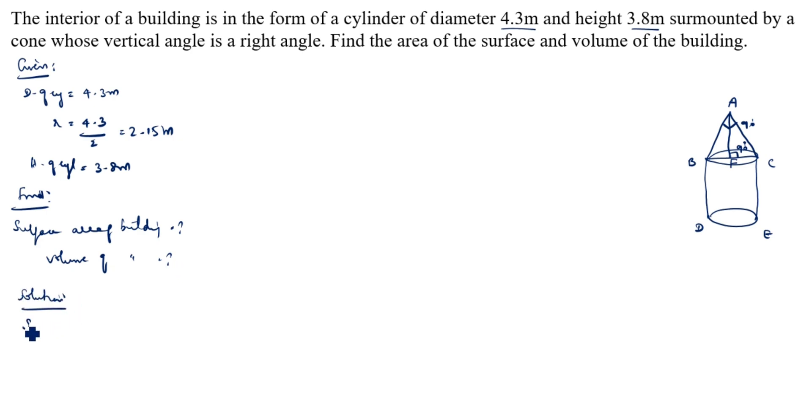What is surface area of building formula? CSA of cone plus CSA of cylinder. What is CSA of cone formula? Pi R L. CSA of cylinder is 2 pi R H. Pi R is common. You can take it as pi R common: L plus 2H.